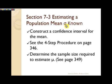And then we want to be able to determine the minimum sample size required to estimate mu. And that's on page 349. You'll see that formula there. So that's fairly easy to go through. The thing that's important with that is we want to always round up to the next higher whole number so that we cover the confidence level.